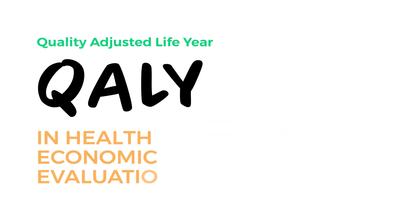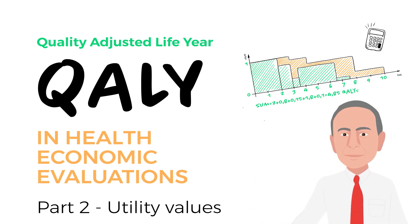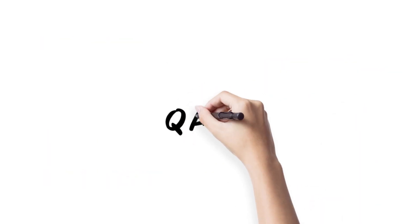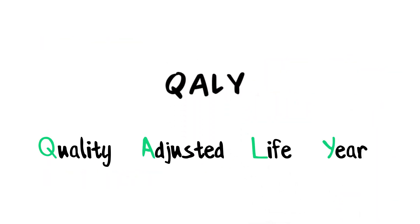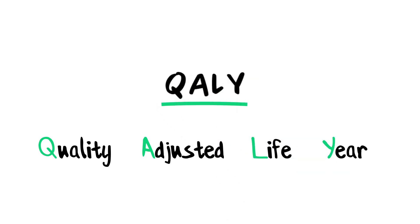Quality Adjusted Life Year — QALY — in Health Economic Evaluations, Part 2: Utility Values. Professor Toomey invites you to this lecture. To make healthcare decisions such as allocating healthcare resources or setting priorities for future programs, QALYs are widely used.